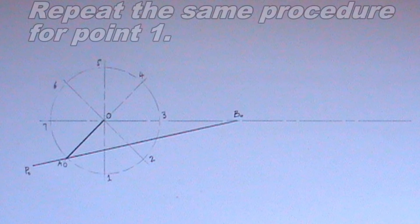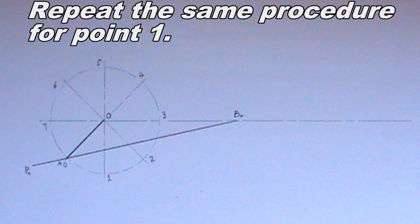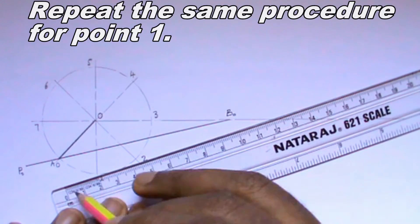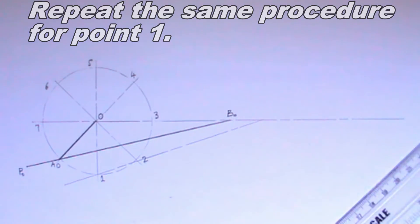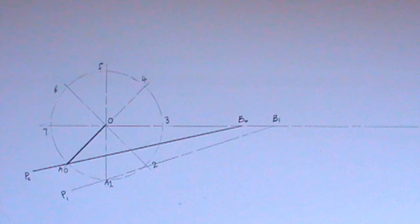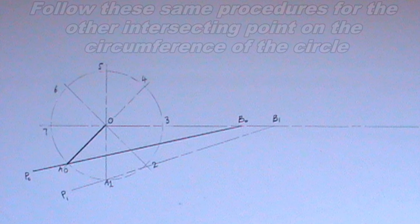I will repeat the same procedure for point 1, but this time I will use thin chain line. I will follow these same procedures for the other intersecting points on the circumference of the circle.